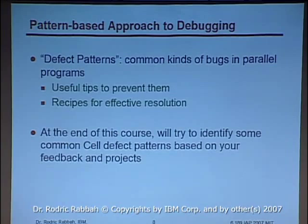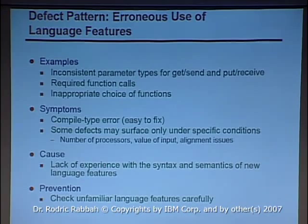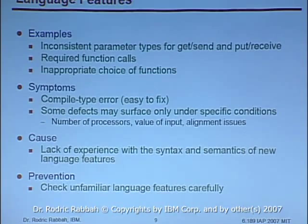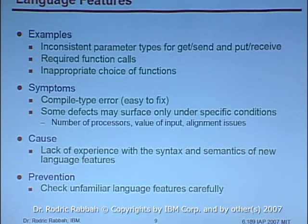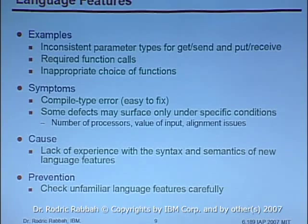Probably the worst and also easiest to fix defect is erroneous use of new language features or extensions that are not well understood. In a class setting where students don't fully know the language or tools, you might have inconsistent types when calling a function, alignment issues, or use of the wrong function. Some are easy to catch at compile time through type mismatches; others, more natural to parallel programs, won't appear until run time, causing crashes or erroneous behavior.